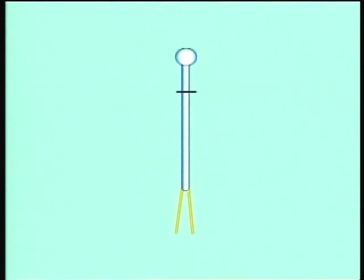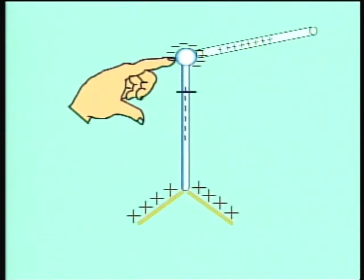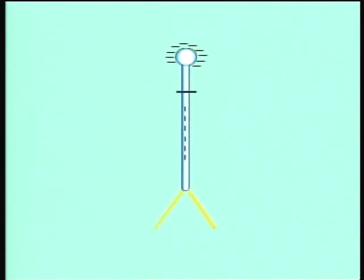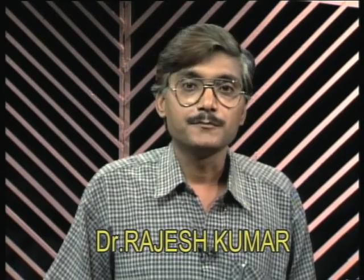To give an electroscope a negative charge, we should repeat the process but use a positively charged glass rod. Remember, when we touch the knob this time, the electrons will flow from our finger to the knob. Thus, to charge anybody positively, we have to remove electrons from it. But if we have to develop a negative charge on any body, we have to shift electrons to that body.